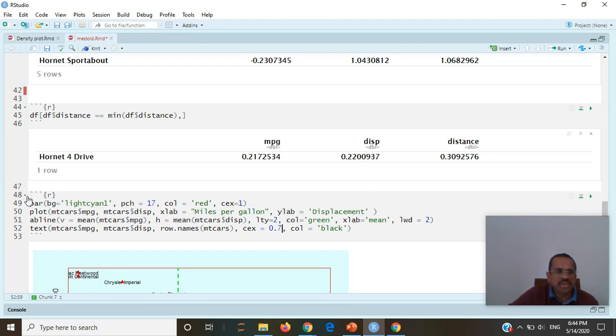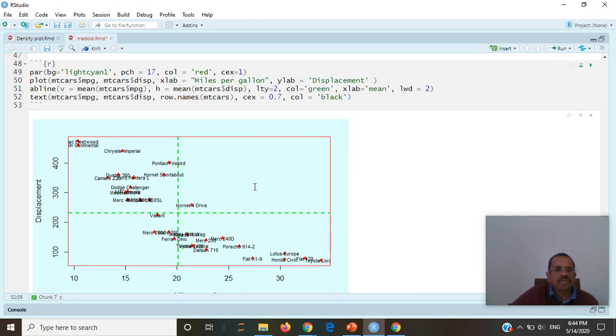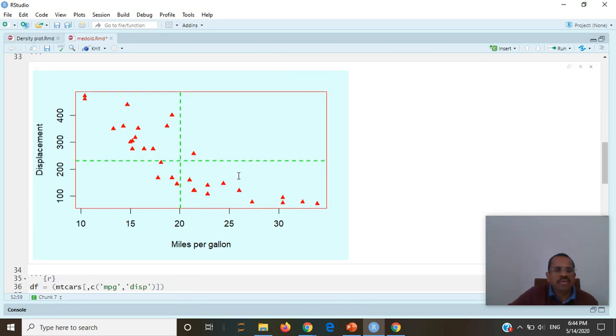With same scatter plot as we seen earlier, I just added these labels, and we can see that Hornet 4 Drive exists where we called it as a medoid. So this is our previous graph. The medoid is here, which is Hornet 4 vehicle.